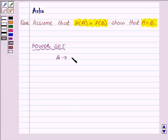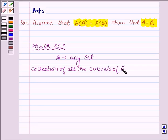Let A be any set. Then the collection of all the subsets of A is called the power set of A, which is denoted by P(A).